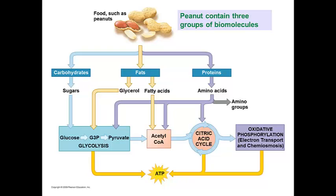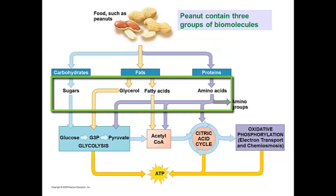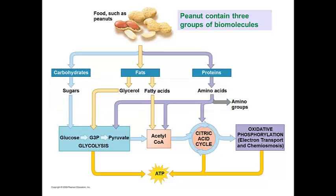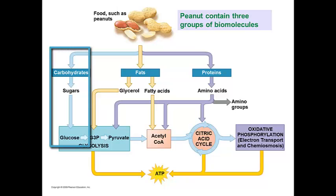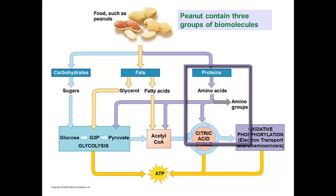Although glucose is considered to be the primary source of respiration, there are actually three sources of molecules that are going to be used to generate ATP, and we get these from the food we eat. Digestion breaks these macromolecules into the monomer subunits used in the cell respiration pathway. Our three macromolecule groups are carbohydrates — whose monomer is a monosaccharide, in this case glucose — fats, whose monomers are glycerol and fatty acids, and proteins, whose monomers are amino acids.